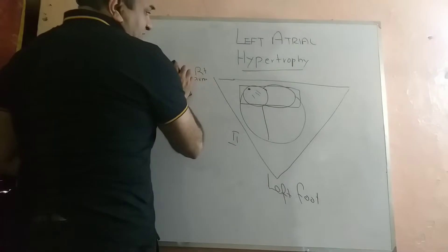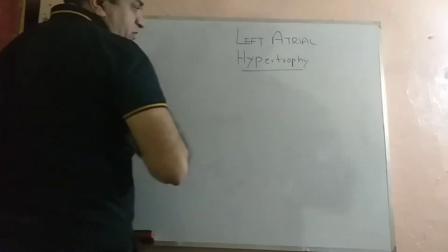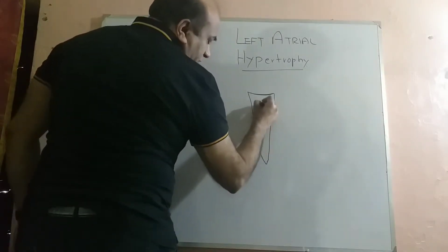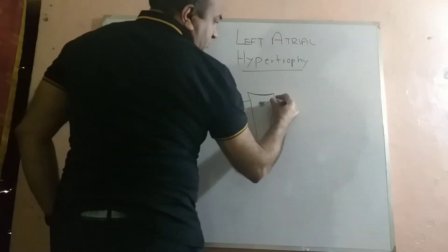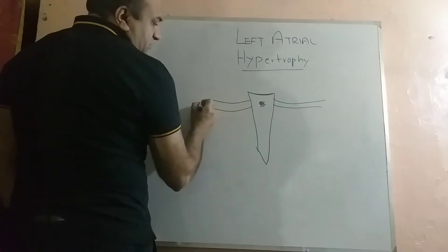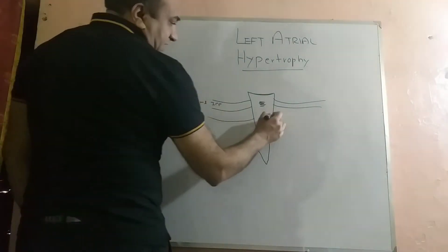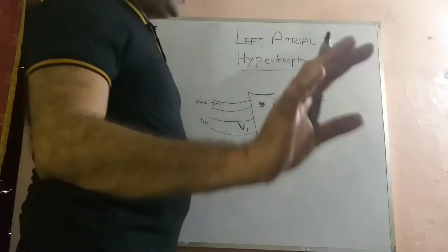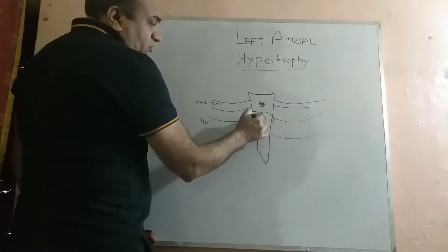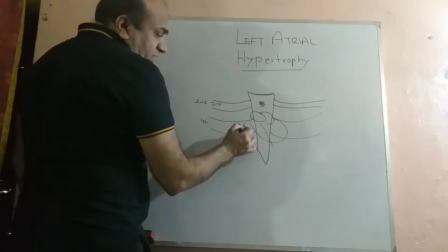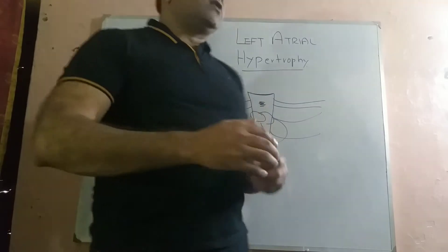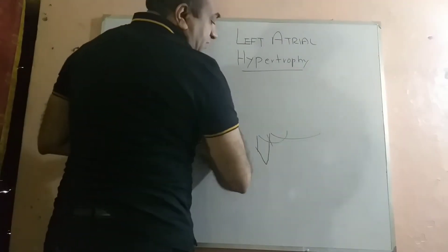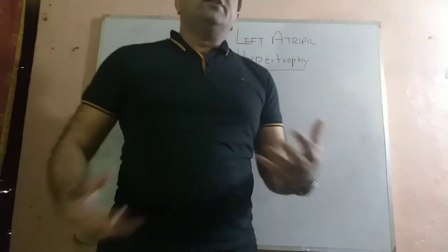We also call chest lead V1 a rhythm lead because of its anatomical location. The sternum is behind which the heart is located. This is the angle of Louis or manubriosternal junction. Just along this manubrium is the 2nd intercostal space, then the 3rd, and then the 4th intercostal space where we place V1. Behind the sternum are the two atria and the ventricle, so V1 is located very close to both atria and the SA node.